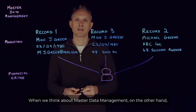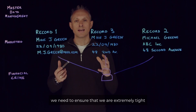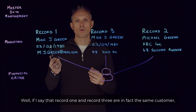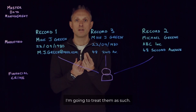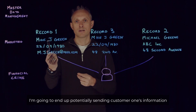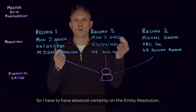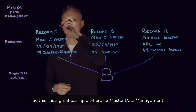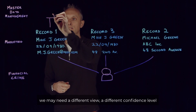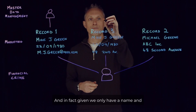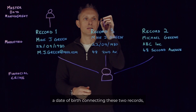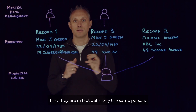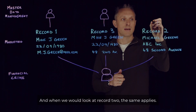So what we can do for financial crime is connect them together as though they're one. When we think about master data management, on the other hand, we need to ensure that we are extremely tight and confident in our matches. If I say that record one and record three are the same customer, I'm going to treat them as such — potentially sending customer one's information to customer three. So I have to have absolute certainty. Given we only have a name and a date of birth connecting these two records, we may not be able to say with enough confidence that they are definitely the same person. And the same applies to record two.